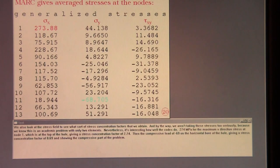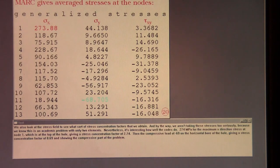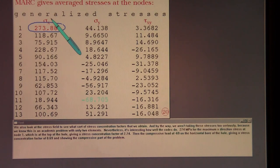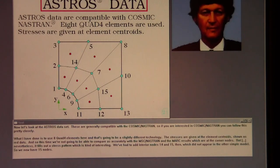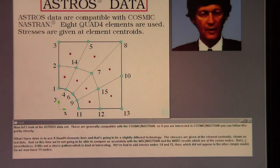By the way, we aren't taking these stresses too seriously because we know this is an academic problem with only two elements. Nevertheless, it's interesting how well the codes do. 274 megapascals for the maximum extraction stress at node 1, which is at the top of the hole, giving a stress concentration factor of 2.74. Then the compressive load of minus 69 on the horizontal bore of the hole, giving stress concentration factor of 0.69 and showing the compressive part of the problem.